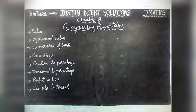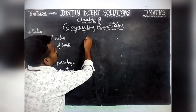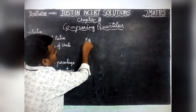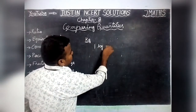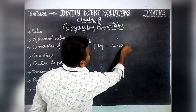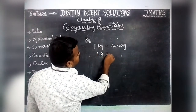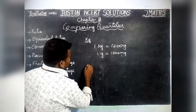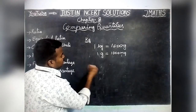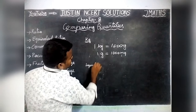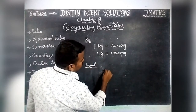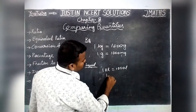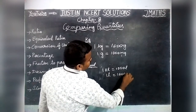Next, we are going to see Conversion of Units. Conversion of Units is very important. For solid shapes we measure Mass — 1 Kilogram is equal to 1000 Grams, 1 Gram is equal to 1000 Milligrams. For Liquid — 1 Kiloliter is equal to 1000 Liters, 1 Liter is equal to 1000 Milliliters.